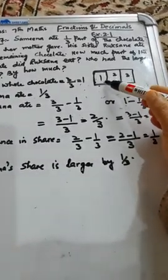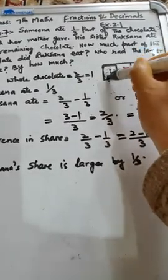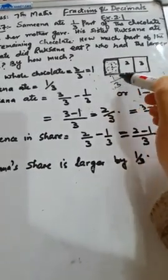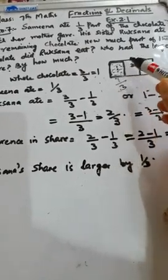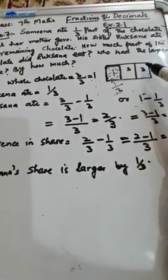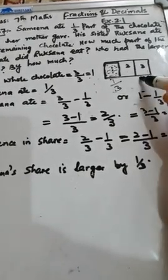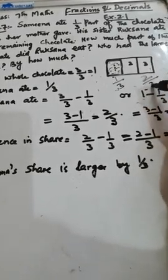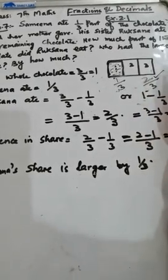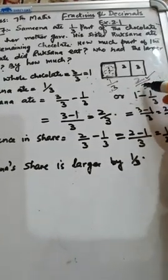This chocolate is equal to three parts — one-third, one-third, and one-third. The total of the three parts of the chocolate, the third one is Rukhsana's part. How much part of the chocolate did Rukhsana eat? Rukhsana's share is two-third parts — two upon three.